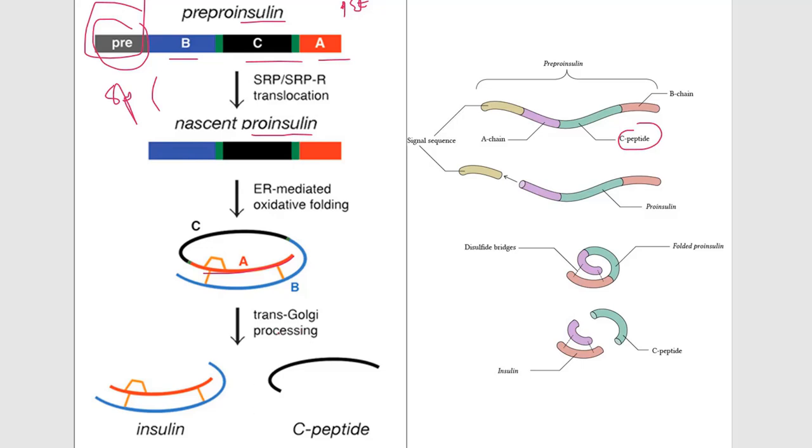Then after that, we have the trans-Golgi processing. In that processing, the C-peptide is cleaved. The C-peptide will be cleaved at two points: first at this junction between A and C, and another at the junction between B and C. There are two cleavage sites, one and two.